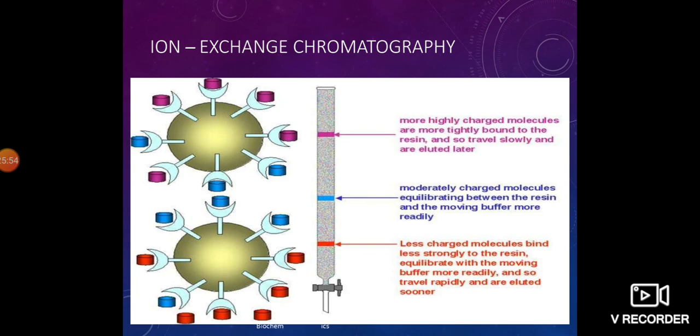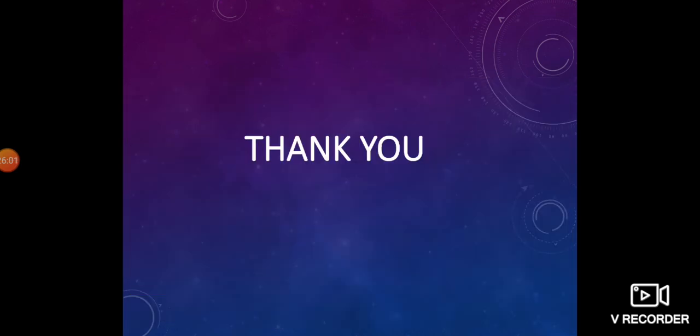The last application is the separation of amino acids. Ion exchange chromatography has been used to separate complex mixtures of 18 amino acids obtained by the acid hydrolysis of proteins. These are the applications of ion exchange chromatography. We conclude today's discussion on ion exchange chromatography. Thank you.